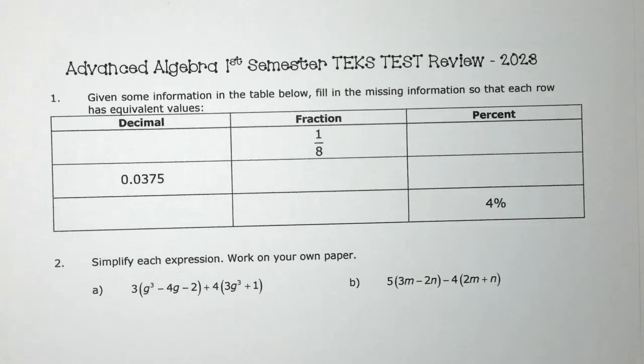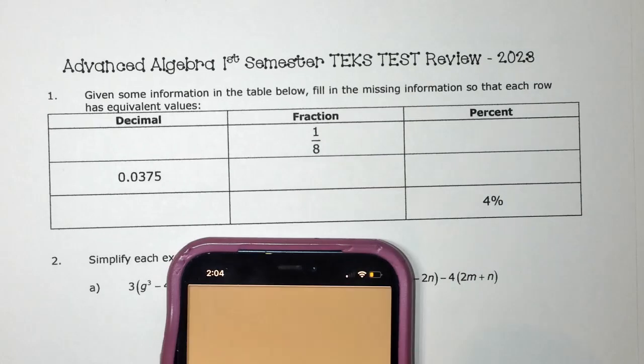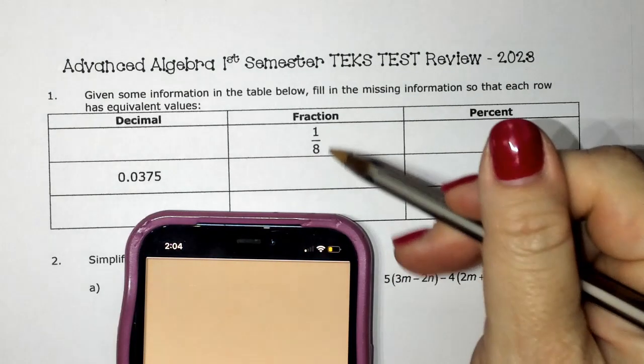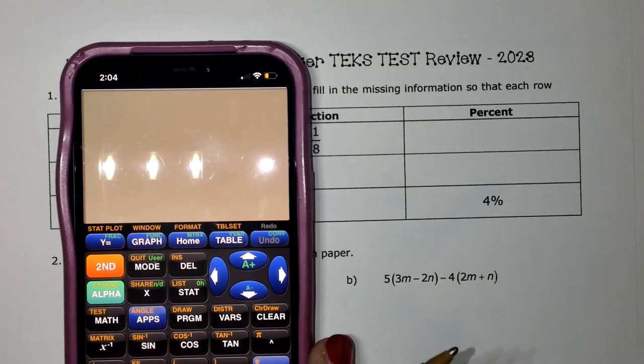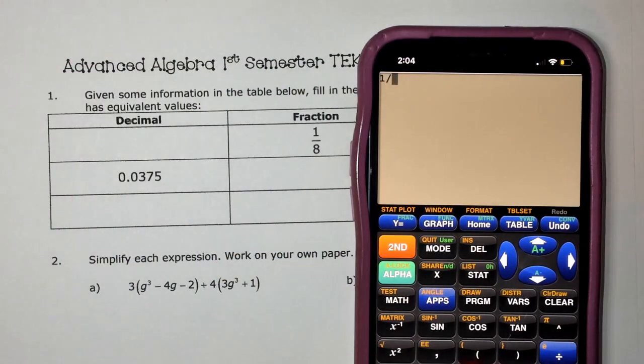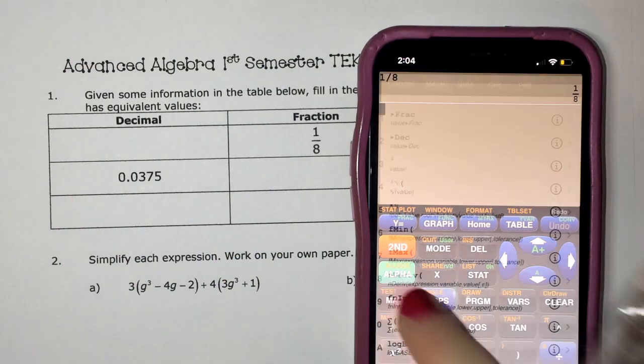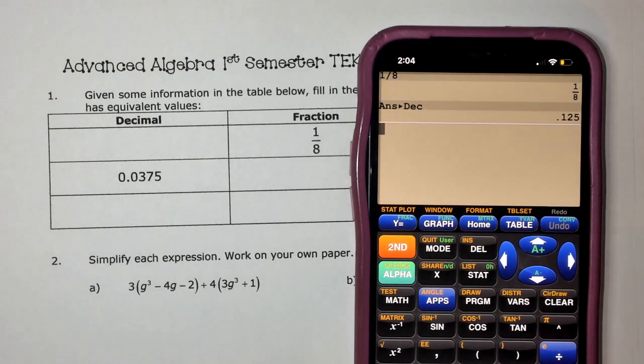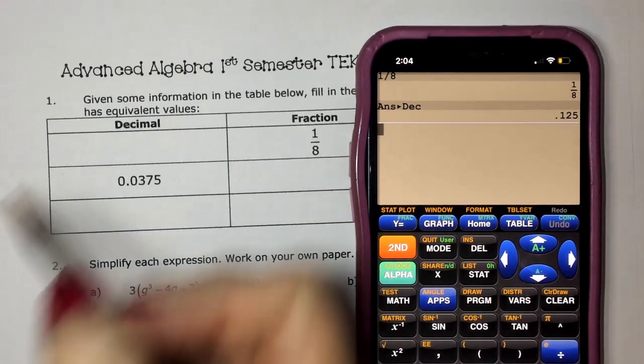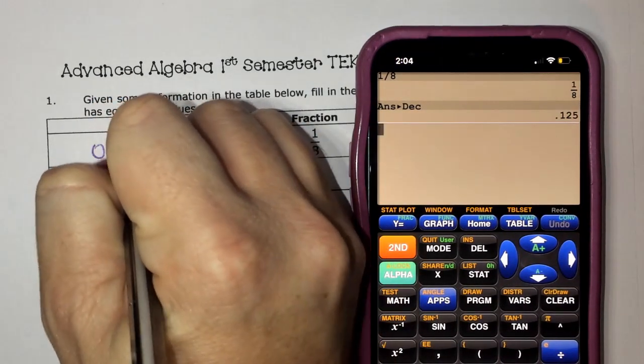Okay, going from decimal to fraction to percent in any order is super simple using a calculator. First things first, to get a fraction in your calculator, you can literally just type 1 divided by 8. Mine keeps it as a fraction, but I'm going to turn it into decimal. This is what your calculator would give you. So we know that this is 0.125.